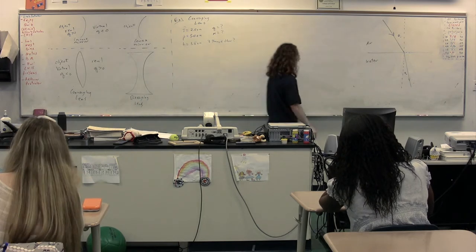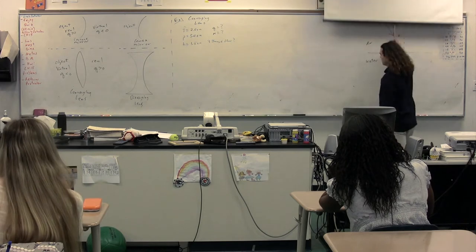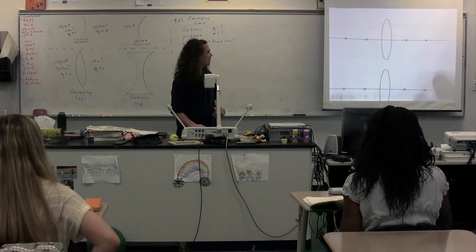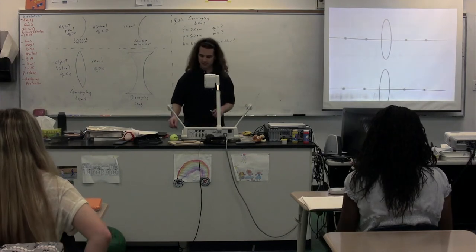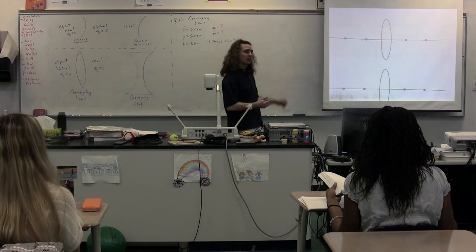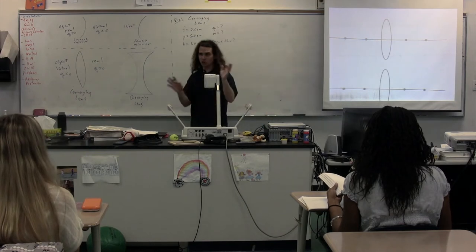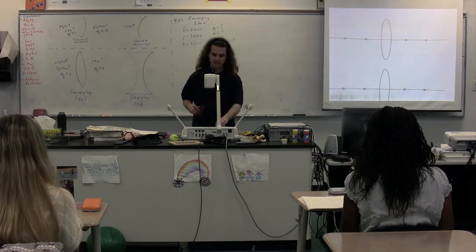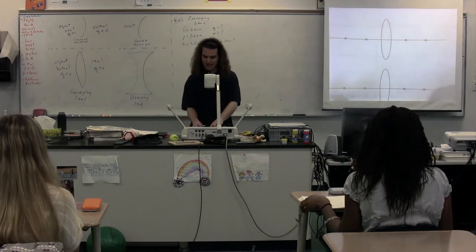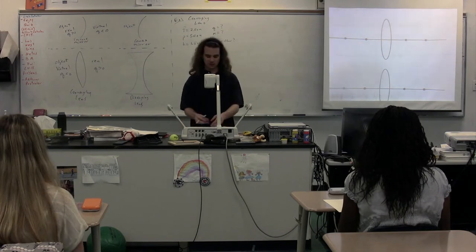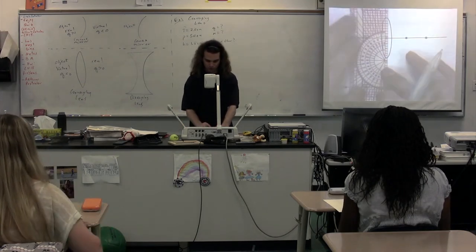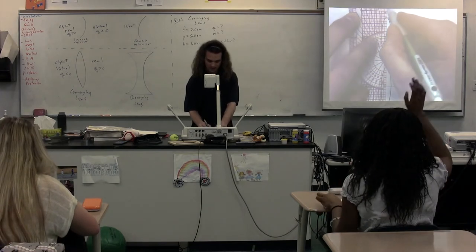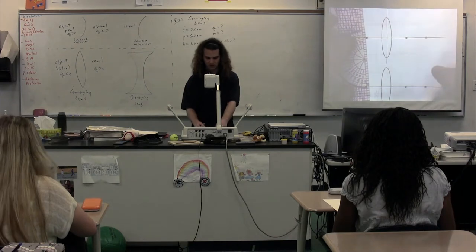Converging lens. We're actually going to start with the ray diagram. Here is our converging lens. The first thing we're going to do — which is slightly different — the majority of what we do is the same for lenses versus mirrors, but the first thing we do with every lens is we draw a line that bifurcates the lens. We draw a vertical line that goes right down the middle of this lens — hence, bifurcating the lens, cutting it in two.